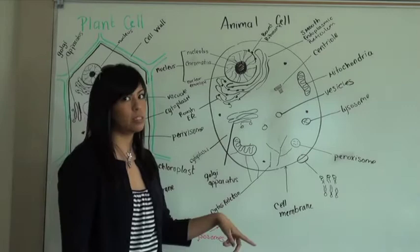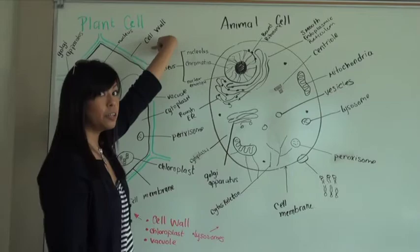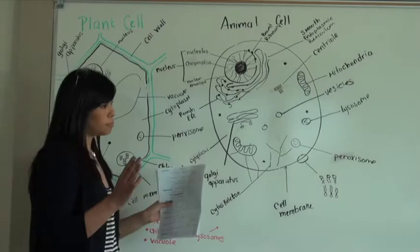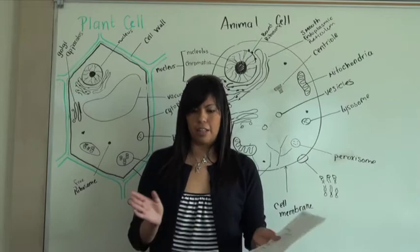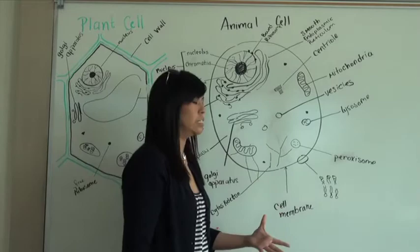Another big difference is the cell wall. Plant cells have a cell wall versus animal cells do not. A cell wall in a plant cell is composed of chitin and cellulose, and this is also to keep its blocky structure. Plant cells, when they're together within a leaf, are a lot more uniform, versus animal cells are kind of more floating within our system.